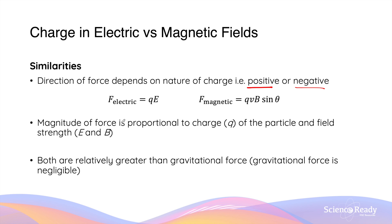The magnitude of force is also proportional to the magnitude of charge. So that means if the particle has a larger charge, the magnitude of both the electric force and the magnetic force are greater. The magnitude is also directly proportional to the field strength, whether it is E, the electric field strength, or B, the magnetic field strength. In simpler words, the stronger the field strength, the greater the force exerted upon the particle.